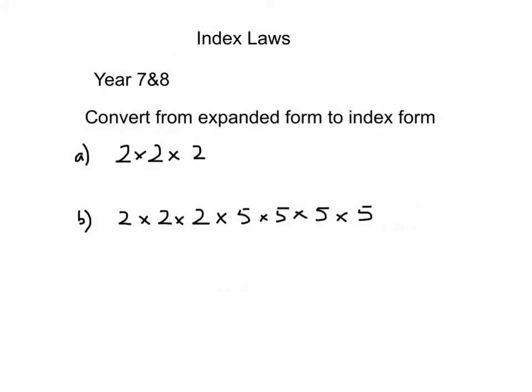We're converting from expanded form to index form, so here this is base 2 to the power of 3. And the next one you've got two bases, you've got the 2s and the 5s, so you need to write it as 2 to the power of something times 5 to the power of something.